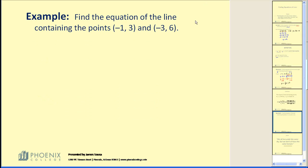Find an equation of a line containing the points (-1, 3) and (-3, 6). We know that if we want to find the equation in slope-intercept form, we need to find two pieces of information: the slope and the y-intercept. We just reviewed the formula to find the slope given two points, so let's use that.